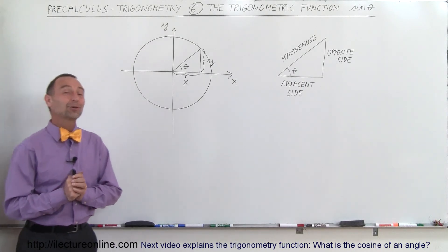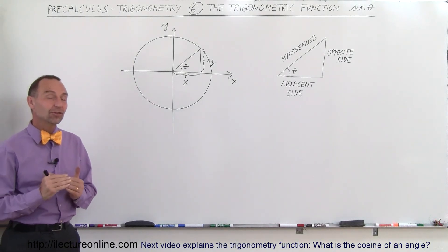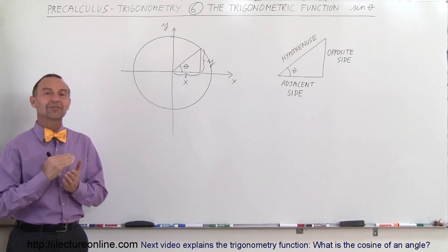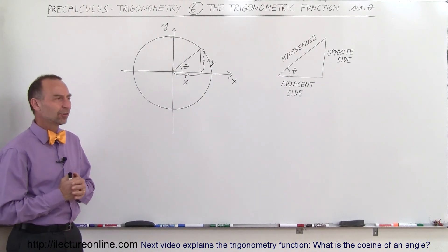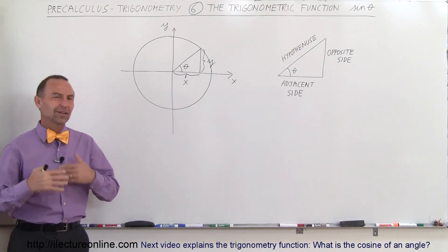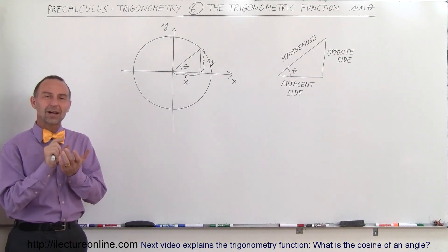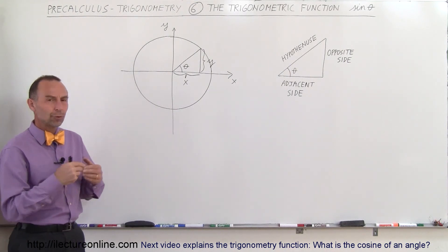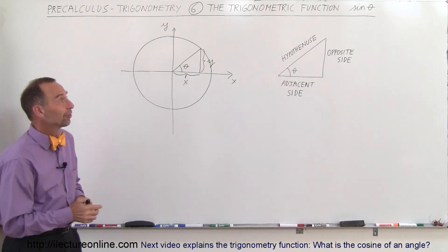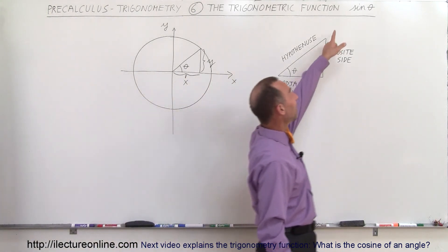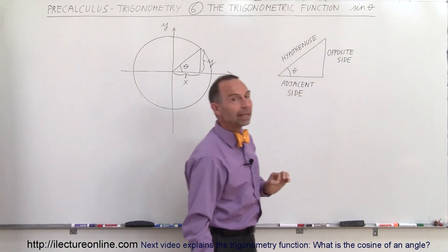Welcome to iLectureOnline. Now we're going to talk about the trigonometric functions and we're going to start with the sine function — the sine of theta. Sometimes you'll see the sine of x or the sine of y, but theta is the common unit we use for angles. So we'll call it the sine of theta, written as S-I-N with the angle symbol behind it.